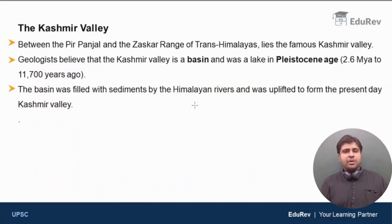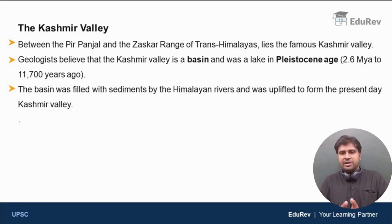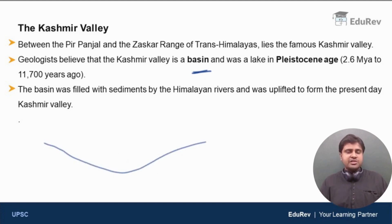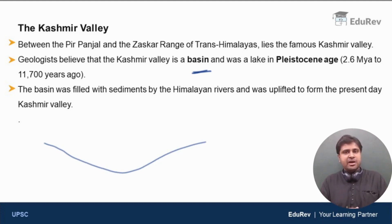Between the Pir Panjal range and the Zaskar range is the famous Kashmir Valley. Scientists say that Kashmir Valley is a basin — a depression in the land. We will understand more about basins and how they form in geomorphology, but for now please keep in mind that the Kashmir Valley is a basin, which is a depression in the land.